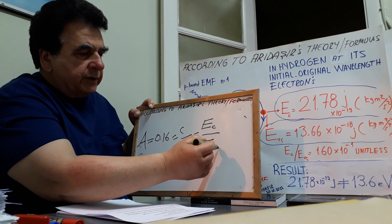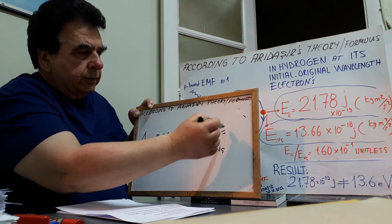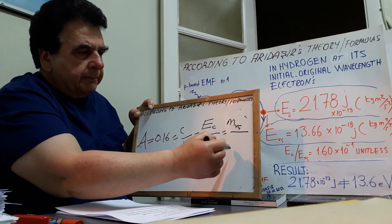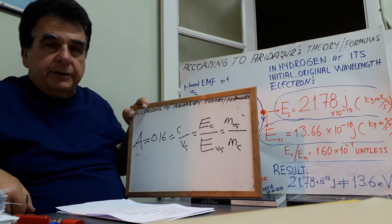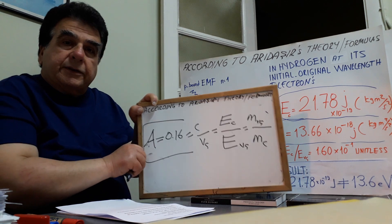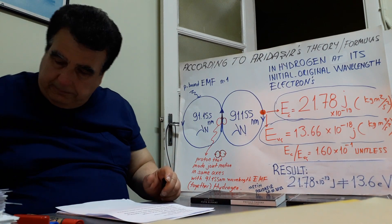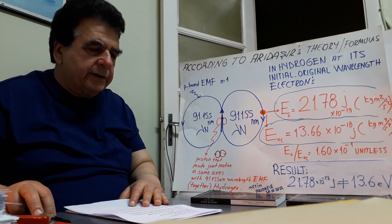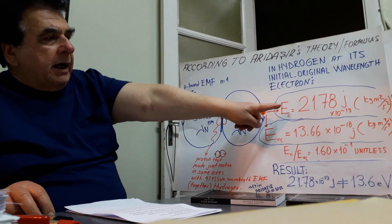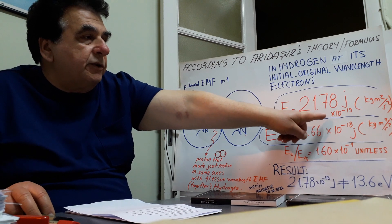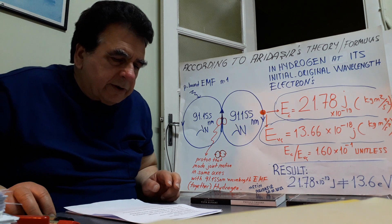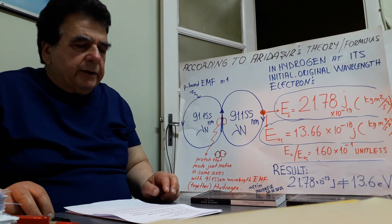To summarize: A equals speed of light divided by tangential velocity, equals speed of light component energy divided by tangential velocity component energy, equals the reverse ratio of tangential velocity component mass to speed of light component mass. This is the unitless constant I put forth. For example, for an electron motion form with 91.155 nanometer wavelength, the C component energy is 21.78×10⁻¹⁹ joules.